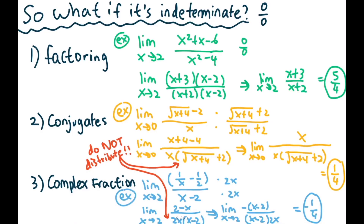What if it's indeterminate — when it looks like zero over zero? First, we can try to factor. Look at this question: limit as x approaches 2 of (x² + x − 6) / (x² − 4). First, remember, we always plug in the value. Two squared is four, plus two is six, six minus six is zero on top. Two squared minus four — four minus four is zero. So that is indeterminate.